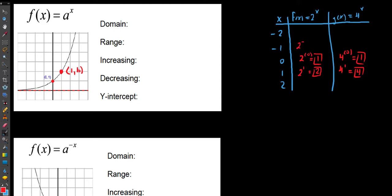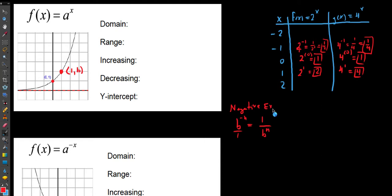Now let's plug in x = -1. From algebra, anything raised to a negative power — say b^(-n) — equals 1 over b^(+n). This is our negative exponent rule: move the base to the other part of the fraction and the sign on the exponent switches. So 2^(-1) = 1/2 and 4^(-1) = 1/4. We can call this the 'move it' rule — move it to the other part of the fraction. Notice that 2^1 = 2 and 2^(-1) = 1/2 are reciprocals of each other, and likewise 4^1 = 4 and 4^(-1) = 1/4 are reciprocals.